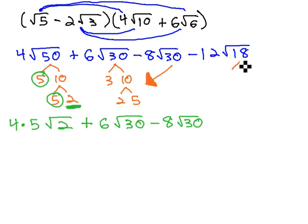On the 18, 18 factors to 3 times 6, and 6 factors to 3 times 2. Again, we see a pair of 3's, so we can factor that out. We now have negative 12 times 3, square root of 2.